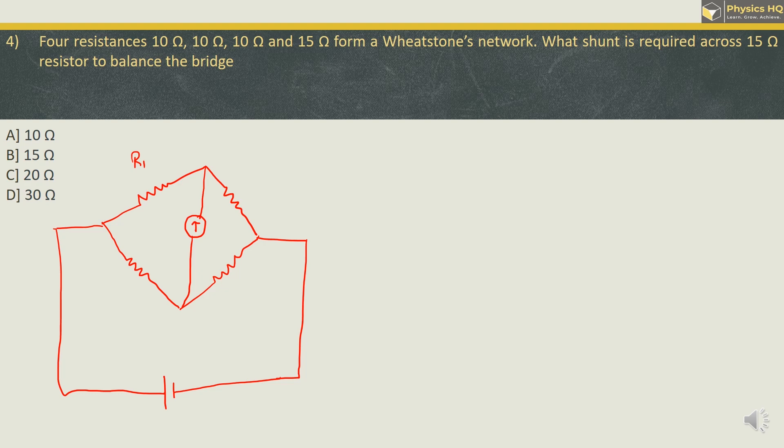This is R1, R2, R3 and R4. Then if the current through this galvanometer becomes 0, we can say that Wheatstone network is balanced over here. The condition for it to balance is R1 upon R2 is equal to R3 upon R4. Now the values that we have over here is 10 Ohm, 10 Ohm, 10 Ohm and 15 Ohm. Now as we can see over here, R1 upon R2 is 10 upon 10 which is equal to 1, and R3 upon R4 over here is 10 upon 15 which is definitely not equal to 1.